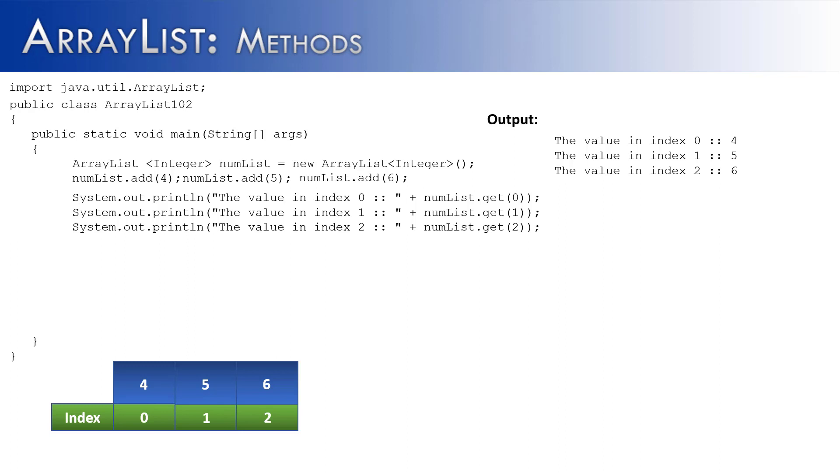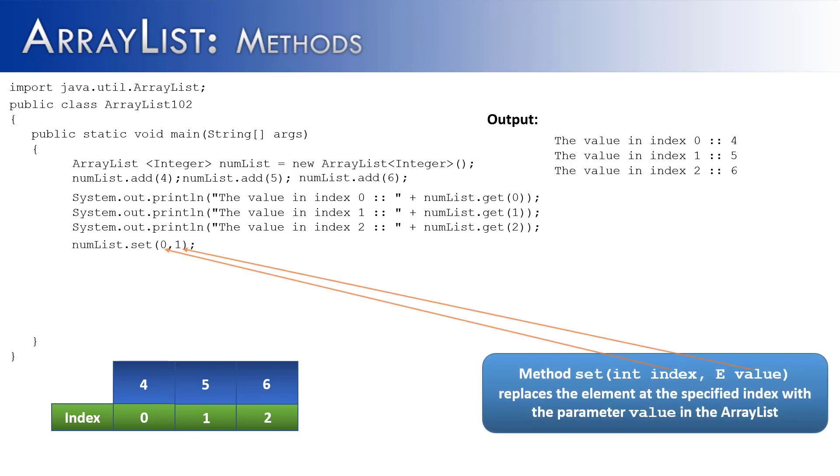Now the method that I want to show you in this example is the set method. The set method is kind of like the overloaded add method, except for it's not going to insert the value. It's actually just going to take one element out and change it into what the new element is. So in this case, the first parameter is the index. So we're going to change the 4 into a 1. So the 0th index should become 1 instead of 4. And that's exactly what happens.